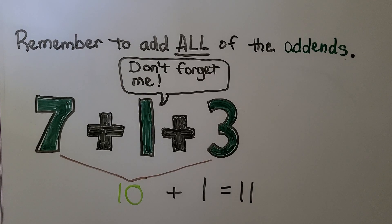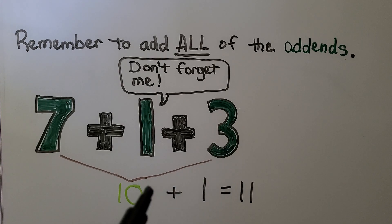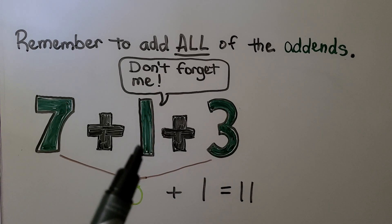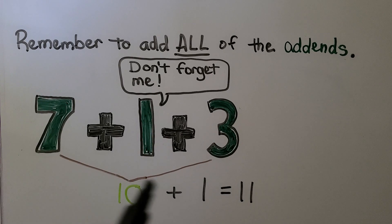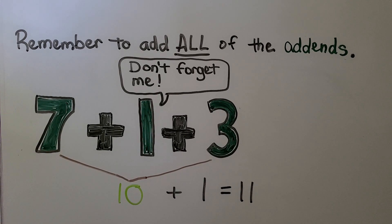Remember to add all of the addends. We can make a 10 with the seven and the three, but don't forget that little one there. We may add two addends and forget the last one, so don't forget any numbers. Remember to add all of the addends to get the correct sum.